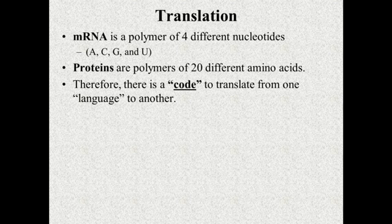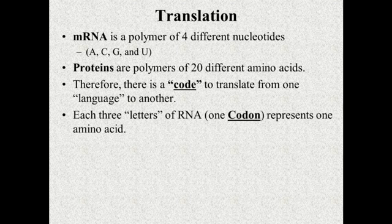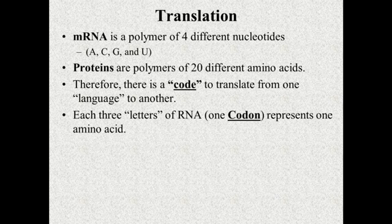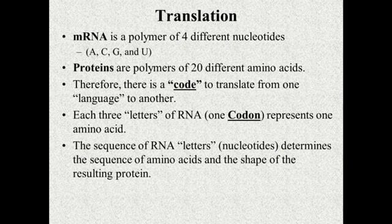That code we call the universal genetic code, and I'll show you a diagram of that in just a minute. Each group of three letters of RNA we call codons, and each codon represents one amino acid. So each grouping of three letters of messenger RNA is a codon, and that codon represents one amino acid. The sequence of RNA letters — the sequence of nucleotides — determines the sequence of amino acids in the protein. And the sequence of amino acids is what determines the shape of the protein.